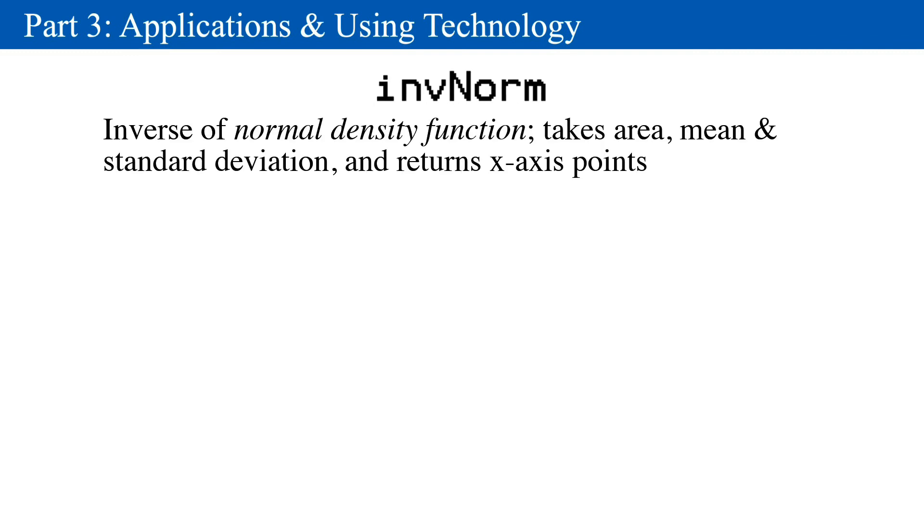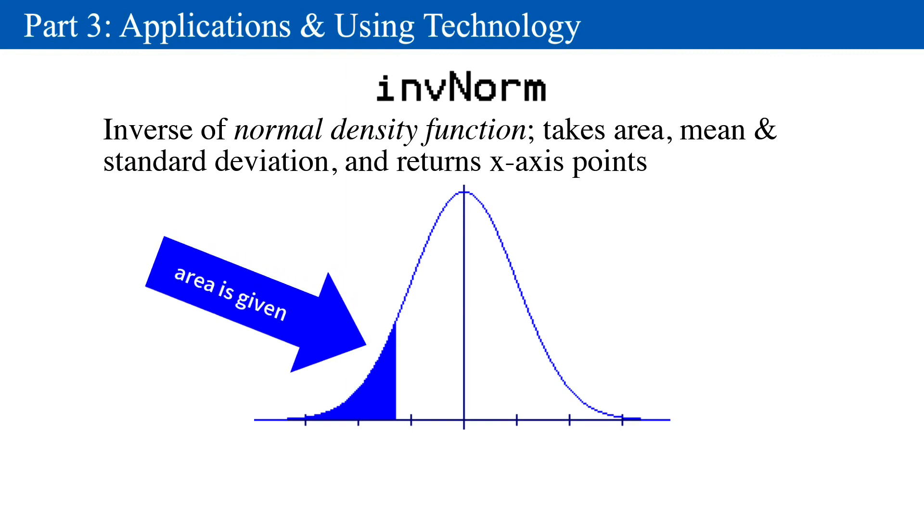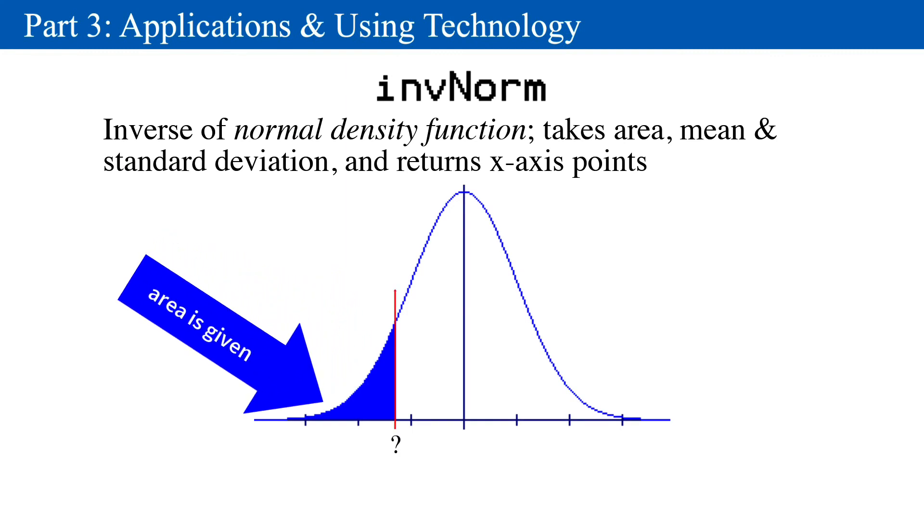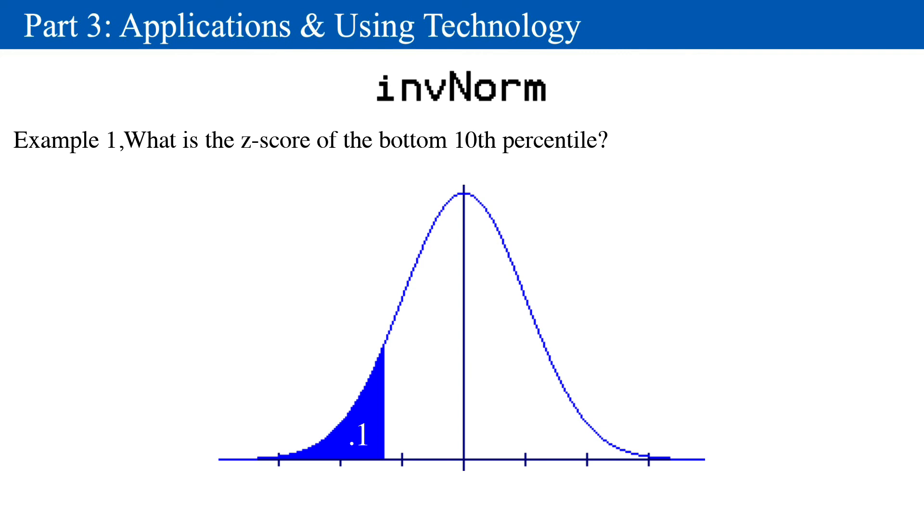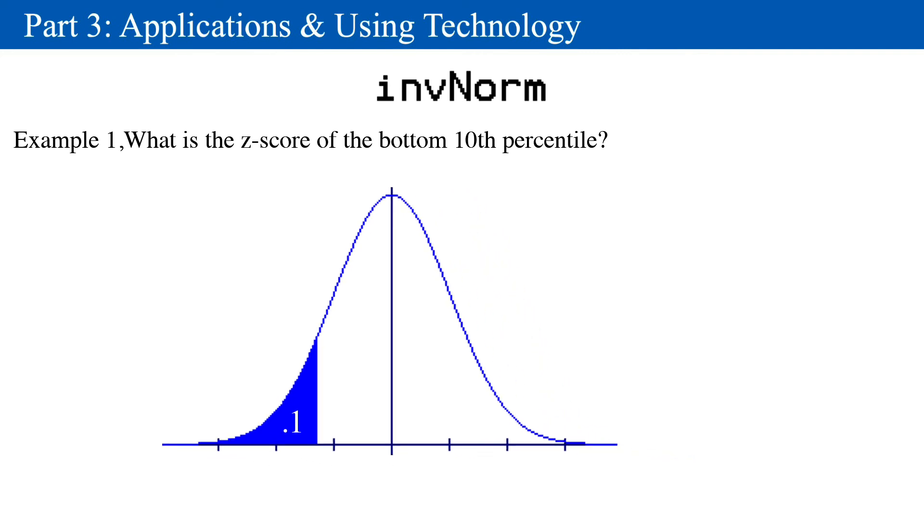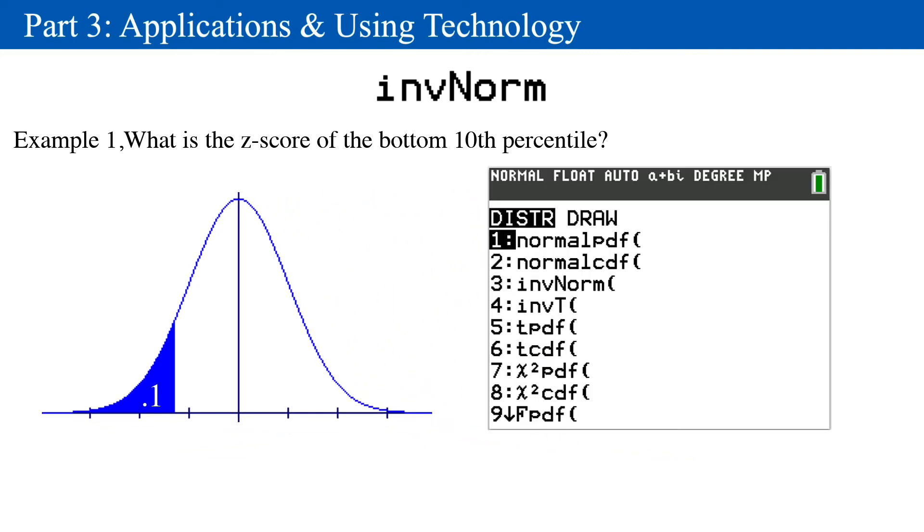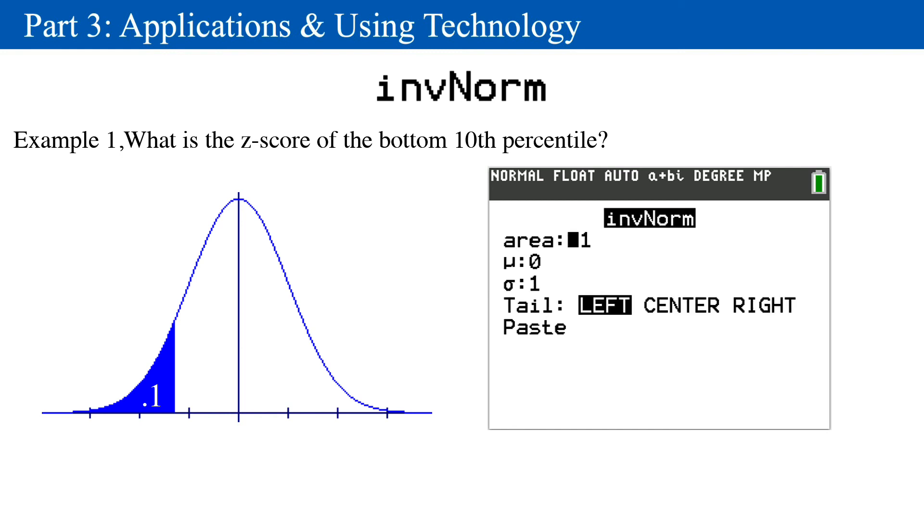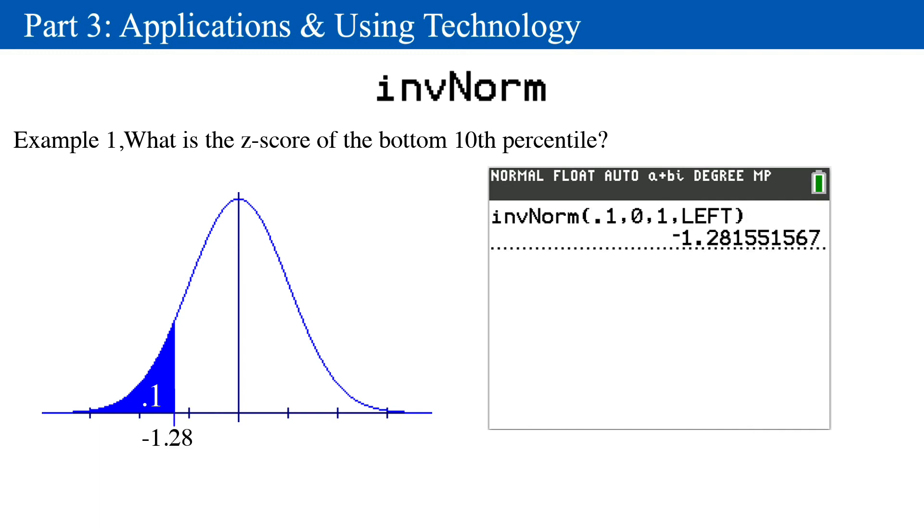The other tool is invNorm, which is an abbreviation for inverse normal. It takes as an input the area under the curve and returns the position along the x-axis. Example 1. Suppose you wanted to see the z-score of the bottom 10th percentile. You'd enter the parameters like so. Area is 0.1, mean is 0, and standard deviation is 1. Be sure the tail is on the left. Paste it in, and press enter to execute the command. There you go. Negative 1.28.